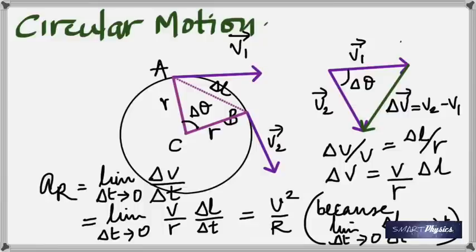Since acceleration exists, there must be a force. Multiplying the centripetal acceleration by the mass of the object gives the centripetal force. The formula for centripetal force is F = m·V²/R. Remember that.